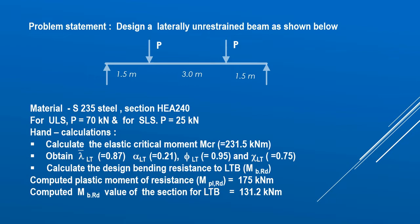Before trying this problem in IDEA StatiCa, I performed hand calculations as per Eurocode. First, we calculate the elastic critical moment Mcr, which is 231.5 kNm. Then we obtain the necessary parameters such as lambda-bar_LT, alpha_LT, phi_LT, and chi_LT. The design bending resistance considering lateral torsional buckling, MbRd, is worked out to be 131.2 kNm. Without LTB, the plastic moment capacity would be 175 kNm, meaning the section capacity is reduced by a factor of approximately 0.75 due to LTB.